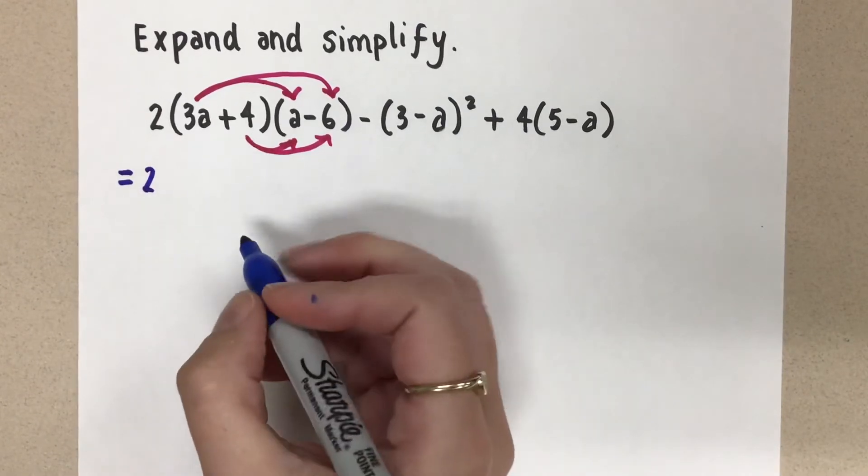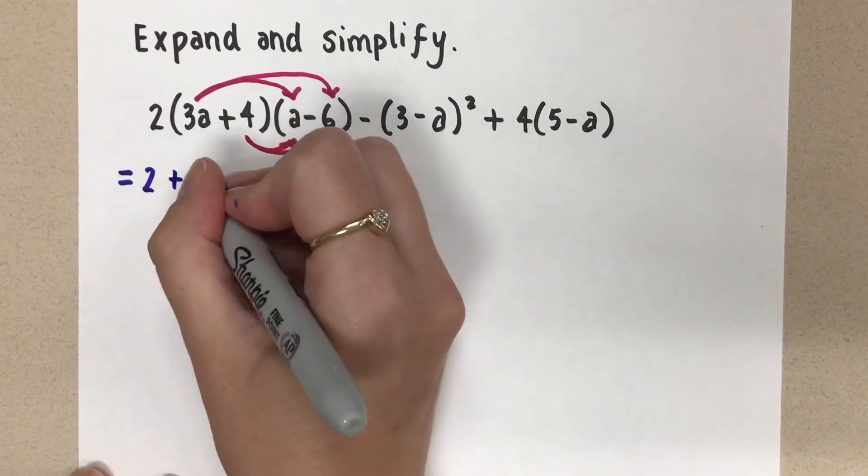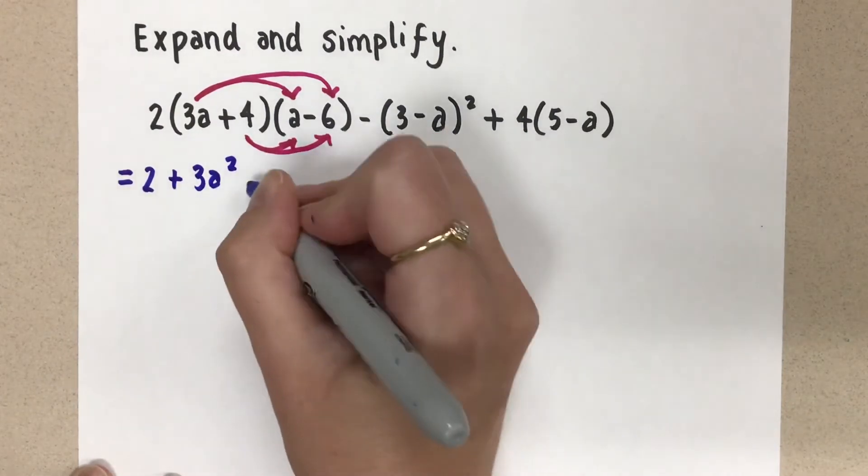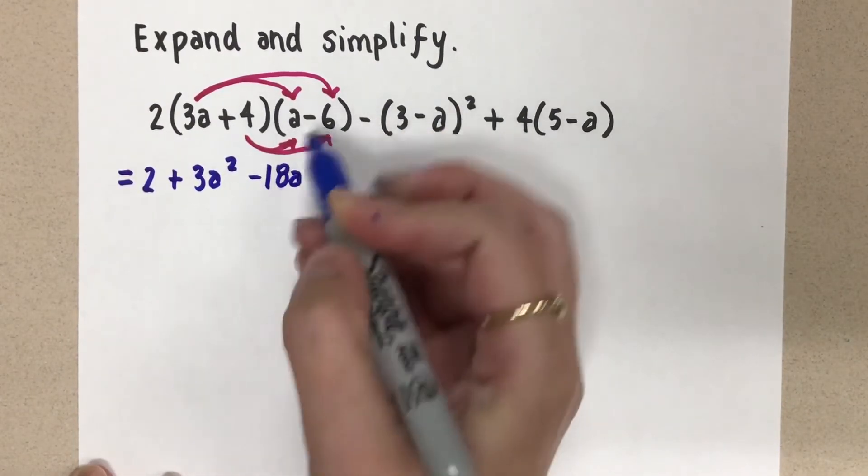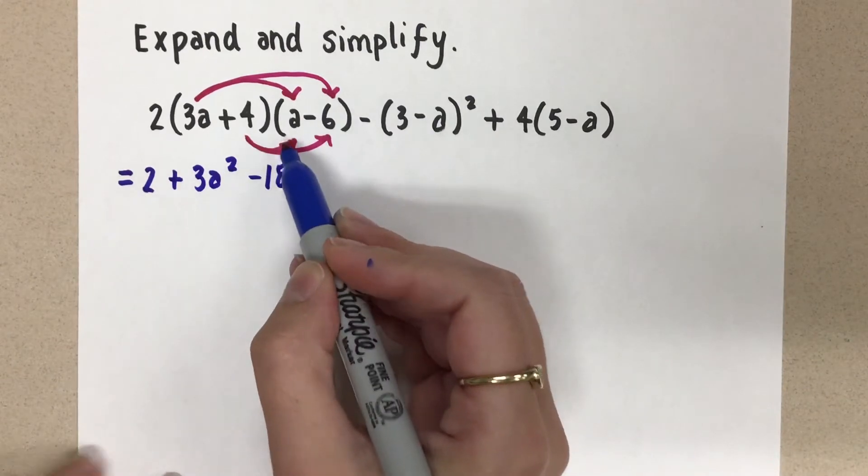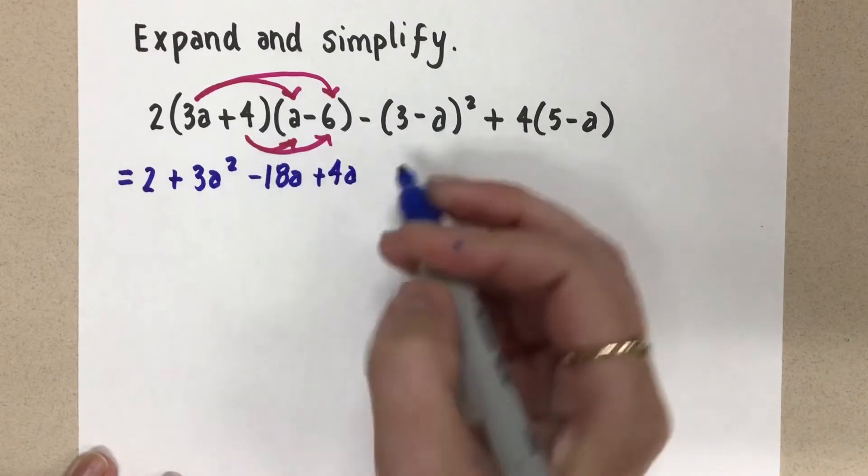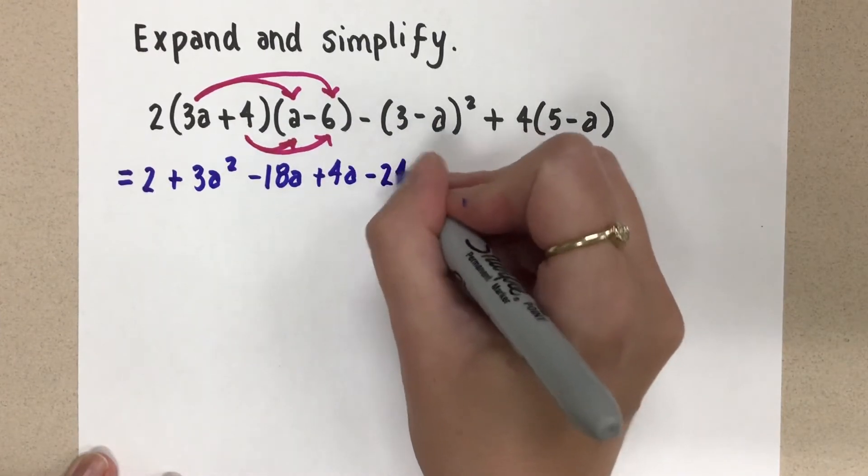So we have 3a times a, that's plus 3a squared. And then 3a times negative six is minus 18a. Then 4 times a is going to be plus 4a. And then 4 times negative six is minus 24.